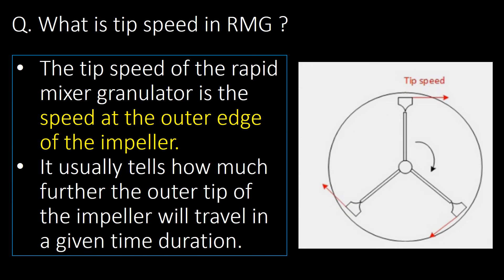What is tip speed in RMG? The tip speed of the RMG is the speed at the outer edge of the impeller. It tells how far the outer tip of the impeller will travel in a given time duration.